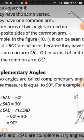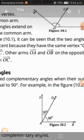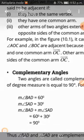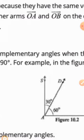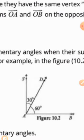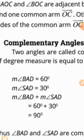Two angles are called complementary angles when their sum of degree measure is equal to 90 degrees. So if we add two angles and they come to 90 degrees, we have complementary angles. For example, angle BAD is 60 degrees and angle DAC is 30 degrees — when we add both, it comes to 90 degrees.